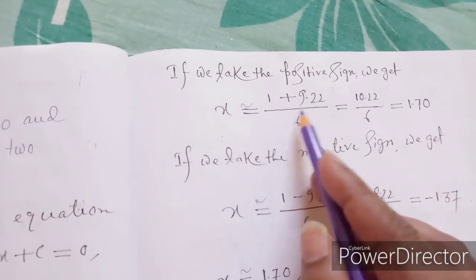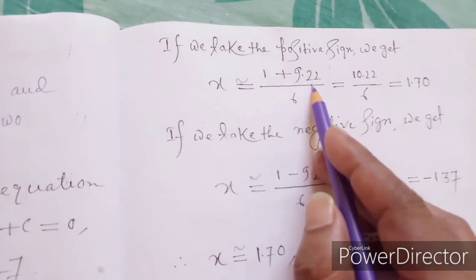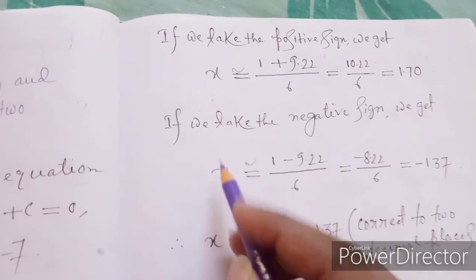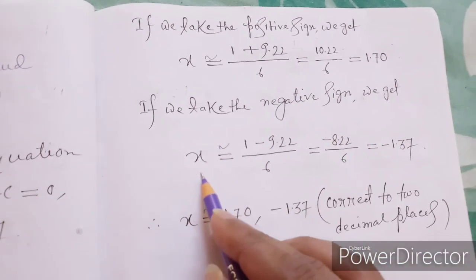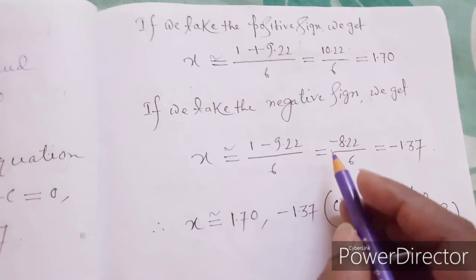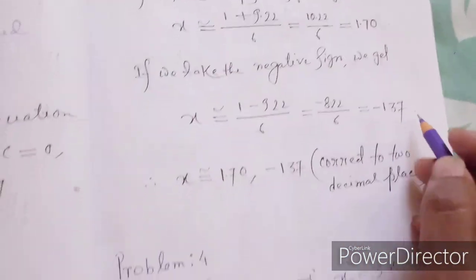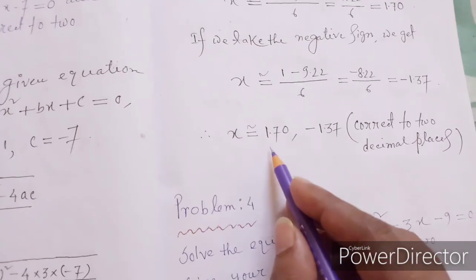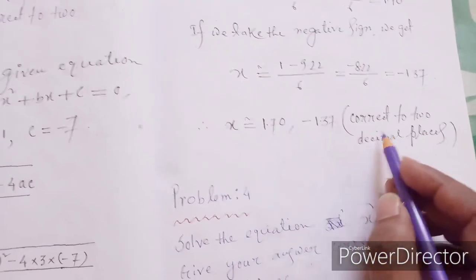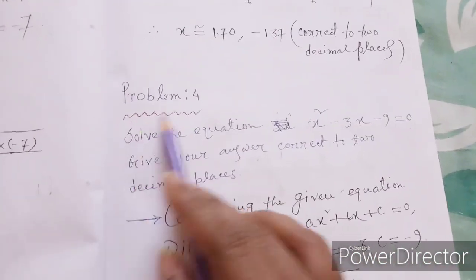Putting √85 ≈ 9.22: taking the positive sign, x = (1 + 9.22)/6 = 10.22/6 ≈ 1.70. Taking the negative sign, x = (1 - 9.22)/6 = -8.22/6 ≈ -1.37. So x = 1.70 or x = -1.37, correct to two decimal places.